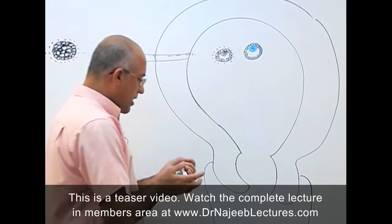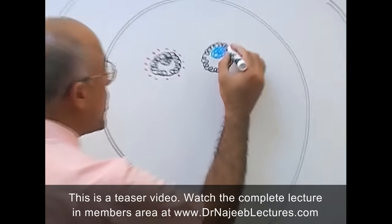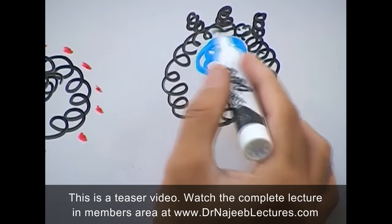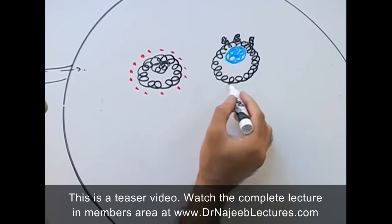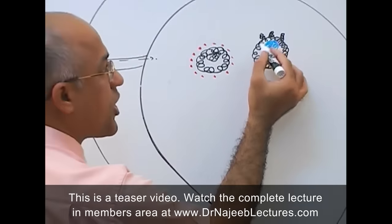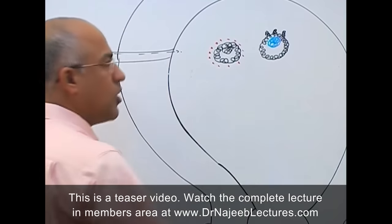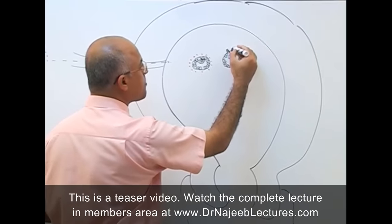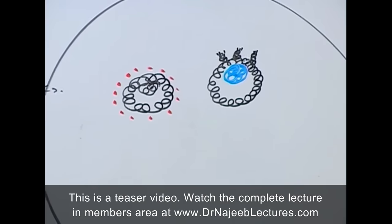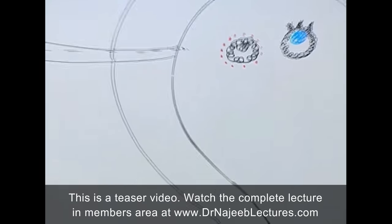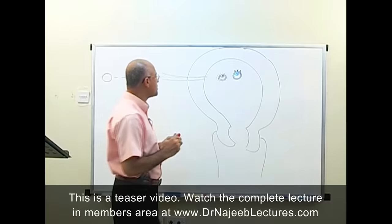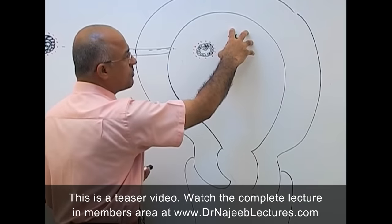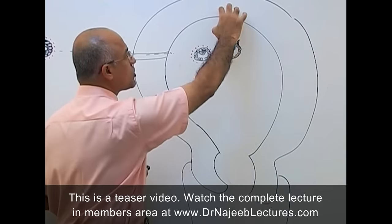Cytotrophoblast cells grow, especially more on the side where the embryoblast is present — this side is called the embryonic pole — and relatively less on the other side, called the abembryonic pole. The cells at the embryonic pole start making special molecules that help the blastocyst stick to the endometrium; some of you may know these molecules are called selectins.